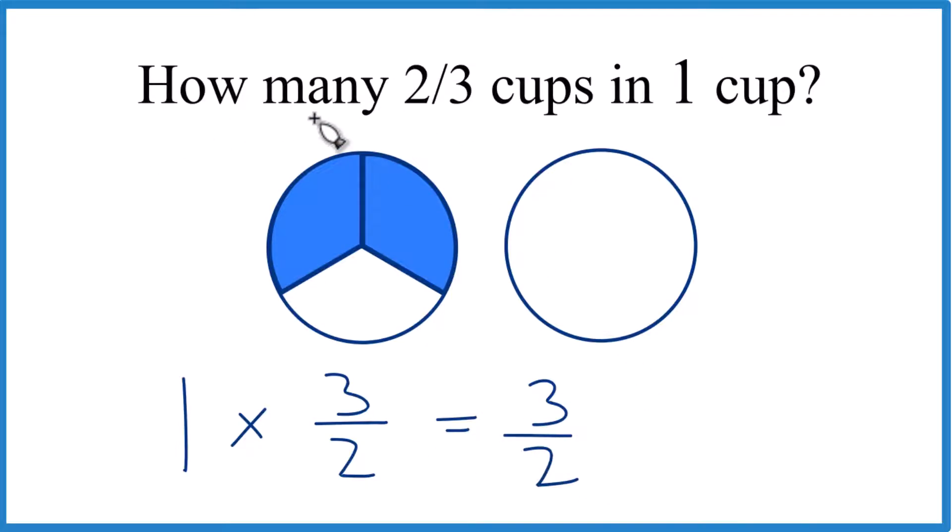So that's our answer. How many two-thirds cups go into one cup? Three over two. But let's change that to a mixed number. Kind of makes more sense. So two goes into three. One times two is two. And we have one left over. Bring that two across.